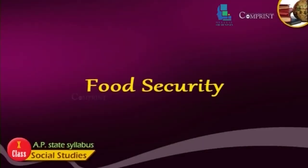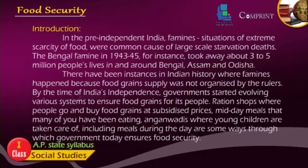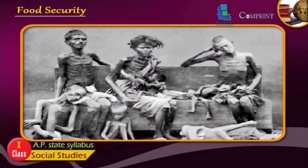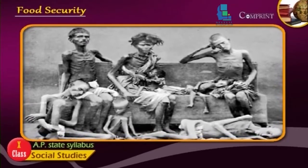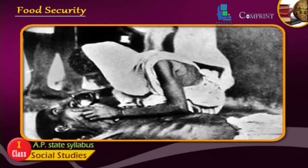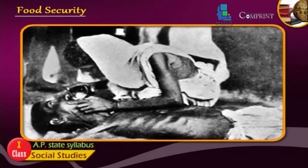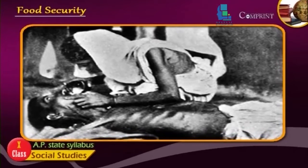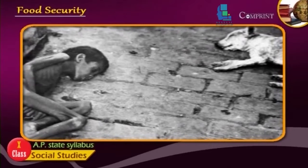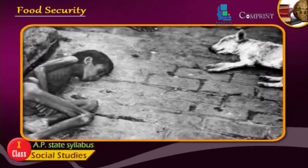Food security in pre-independent India: famine situations and extreme scarcity of food were very common, causing large-scale starvation deaths. The Bengal famine in 1943-45, for instance, took away about 3.5 million people's lives in and around Bengal, Assam, and Orissa. There have been instances in Indian history where famines happened because food grain supply was not organized by the rulers.